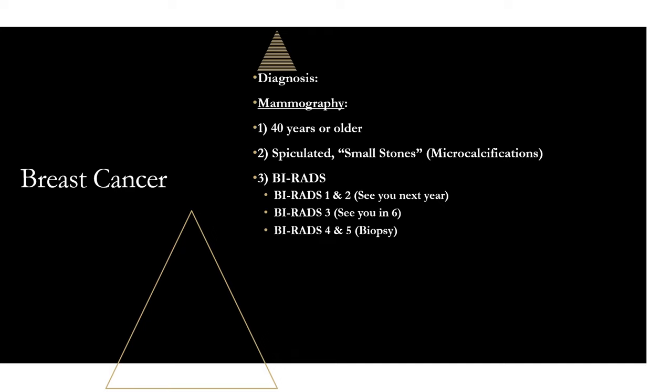BIRAD 4 and 5 means you're getting a biopsy. BIRAD 4 is broken into subcategories A, B, and C depending on likelihood of malignancy — don't memorize those, just remember BIRAD 4 and 5 means biopsy in most cases. BIRAD 0 means the imaging was inconclusive and needs further evaluation. BIRAD 6 means the mass was already biopsied and proven malignant.